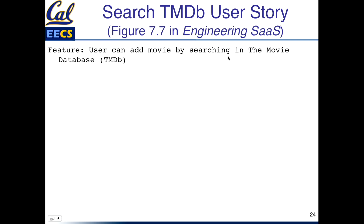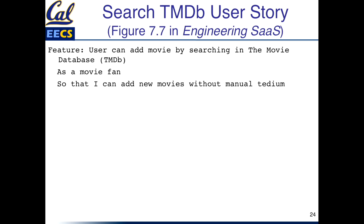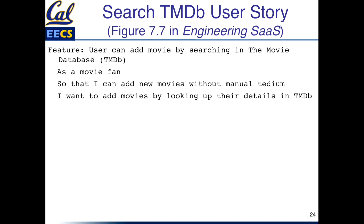Let's go over what the feature looks like using the Cucumber format. The feature is: 'User can add a movie by searching in The Movie Database, TMDB.' As a movie fan, so I can add new movies without manual tedium, I want to add movies by looking up their details in TMDB.